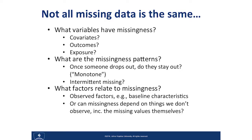Not all missing data is the same. In terms of what solutions make sense, you need to think about which variables have the missingness — is it covariates, the outcome of interest, or the exposure? Today we're going to hear about methods focused on outcome missingness specifically. There are some tools that can be used in that context that are harder to use in a more general context.